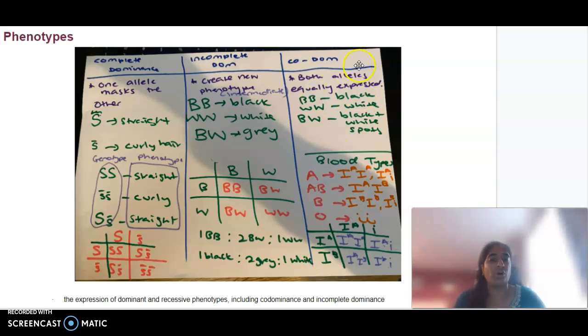We then have what we call codominance, and codominance is where both the alleles are equally expressed. Let's still say I have black feathers represented by capital B, capital B, and white feathers represented by capital W, capital W. In this case though, my heterozygous, my BW, is going to be black and white feathers, or black and white spots, or whatever it may be, but it's a combination of both being equally expressed. So it's not forming a new intermediate phenotype like it is in incomplete dominance. In codominance, it's expressing both of them. A real-life example that we look at here is blood type.